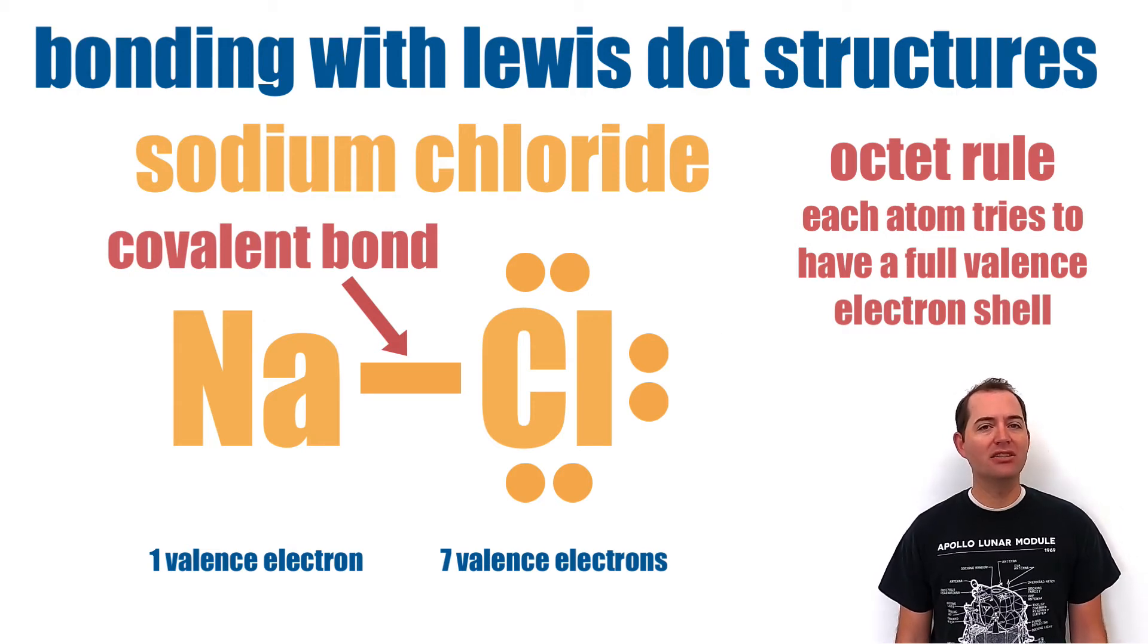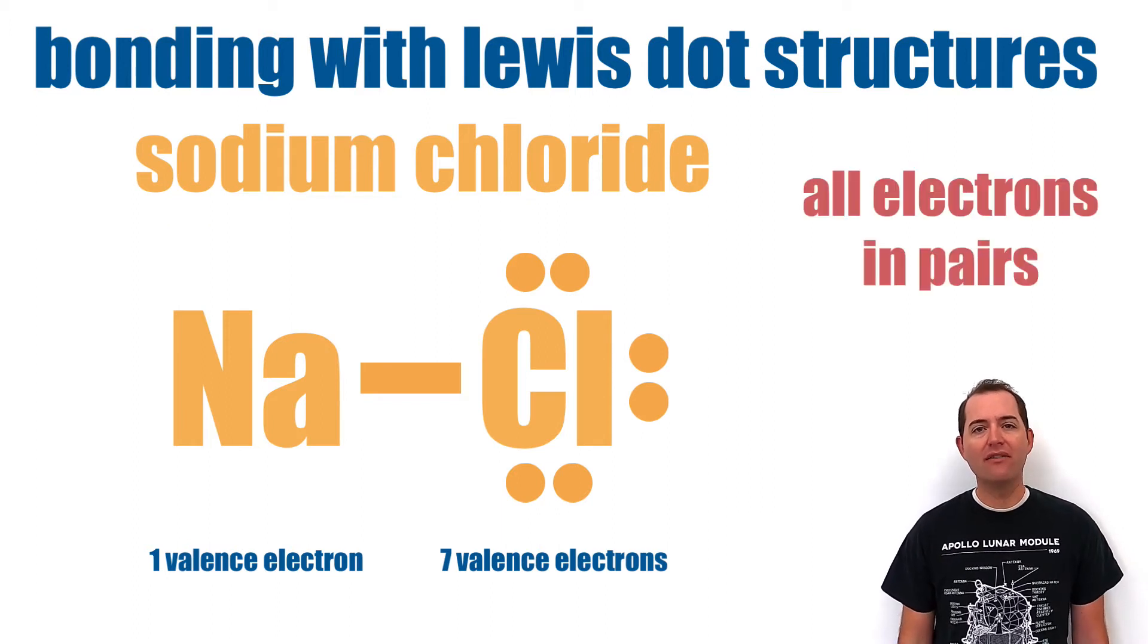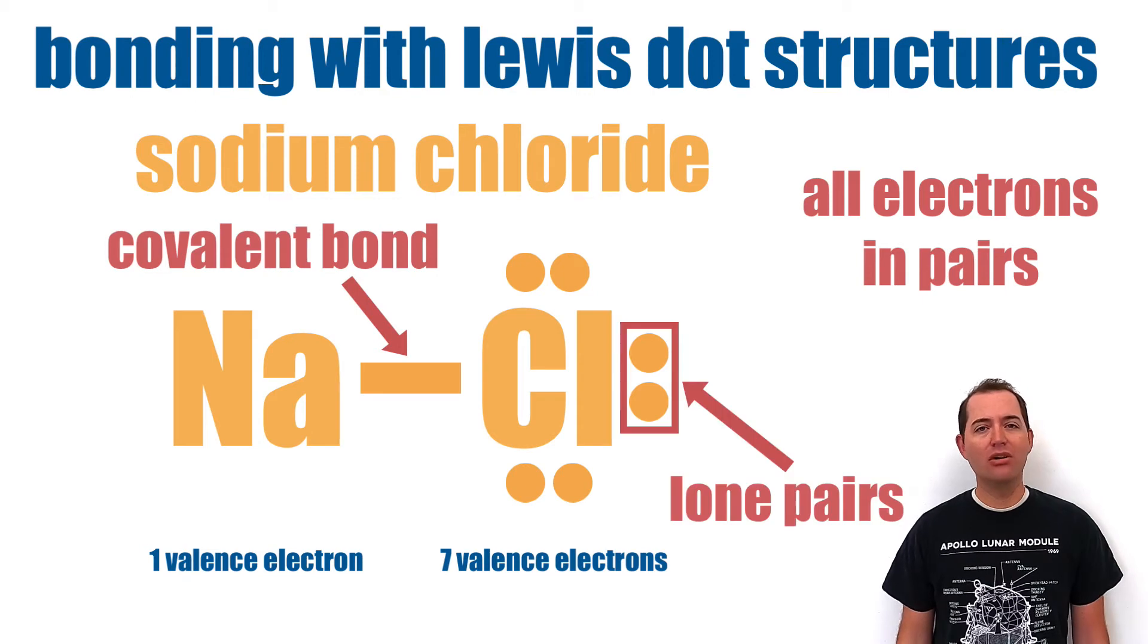When this happens, we change the two dots of the two elements to a line. This line represents a covalent bond where the two valence electrons are shared. A good Lewis dot structure should have all electrons in pairs, either in covalent bonds or lone pairs.